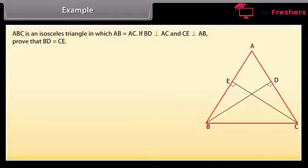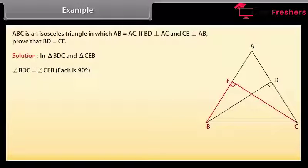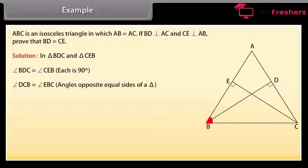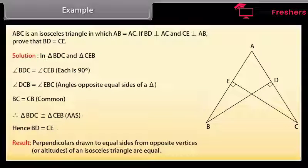Example: ABC is an isosceles triangle in which AB equals AC. If BD is perpendicular to AC and CE is perpendicular to AB, prove that BD equals CE. Solution: In triangle BDC and triangle CEB — angle BDC equals angle CEB because each is 90 degrees; angle DCB equals angle EBC because angles opposite equal sides of a triangle are equal; and BC equals CB (common). Therefore by AAS, triangle BDC is congruent to triangle CEB, and hence BD equals CE. This result tells us that the altitudes drawn to equal sides of an isosceles triangle from the opposite vertices are equal.